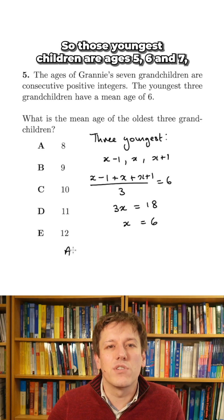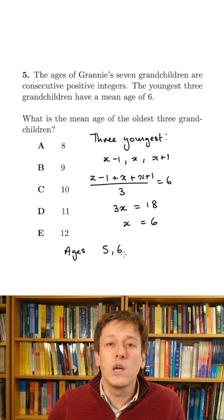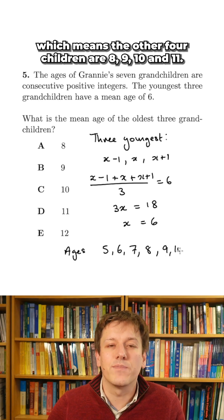So those youngest children are ages five, six, and seven, which means the other four children are eight, nine, ten, and eleven.